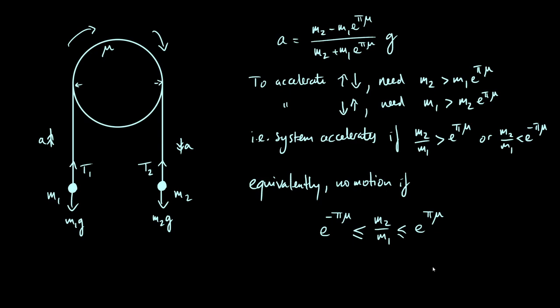You can also see that if you make mu bigger, so if you make the friction bigger, then e to the pi mu gets bigger, e to the minus pi mu gets smaller, and so you expand this allowed range of mass ratios such that no motion occurs. All right. So that's all in accordance with what we'd expect on physical grounds.